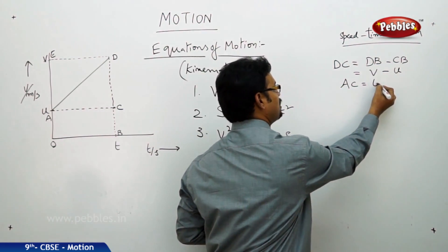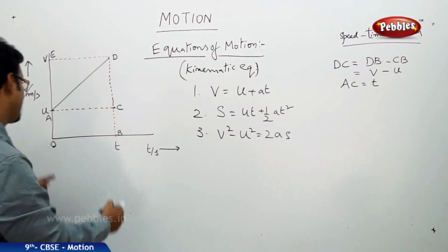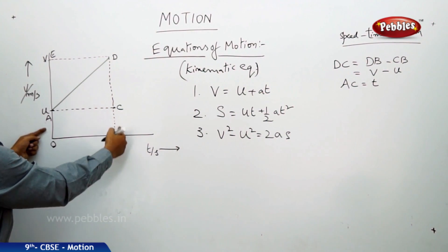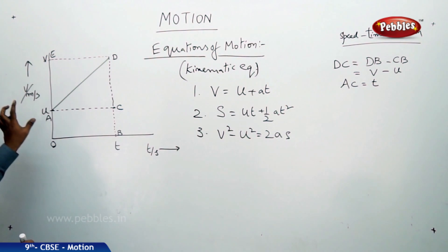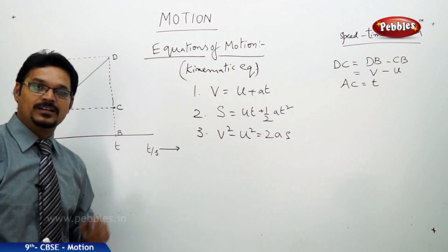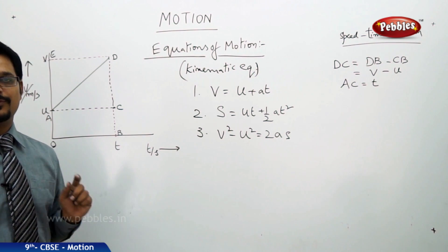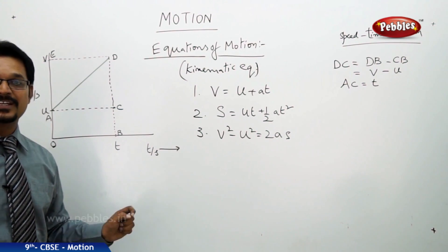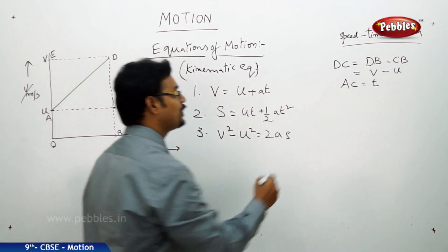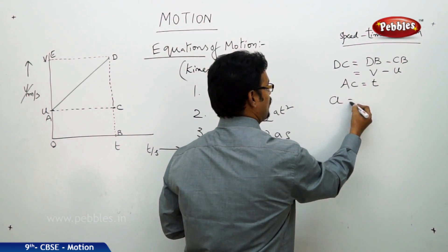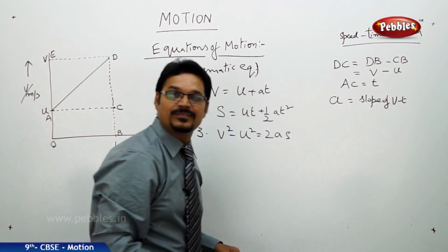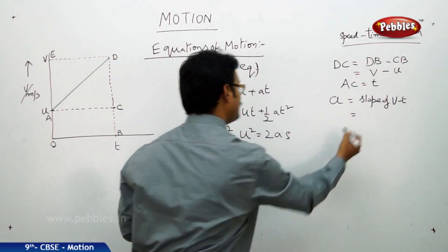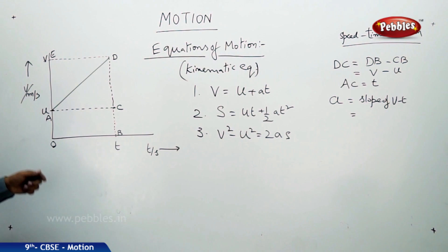Now, AC is nothing but OB, and OB is the time taken, so AC = t. From the v-t graph, to find acceleration we use the slope of the v-t graph, so acceleration a equals the slope of the v-t graph.